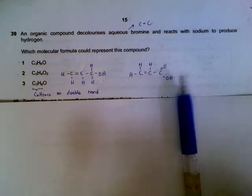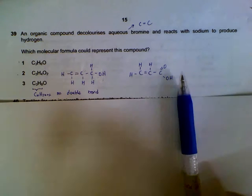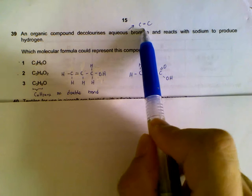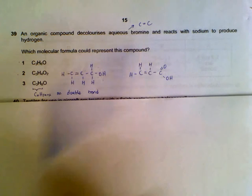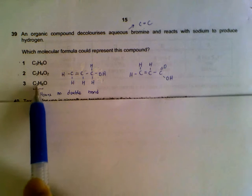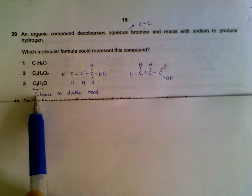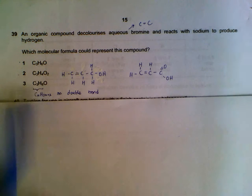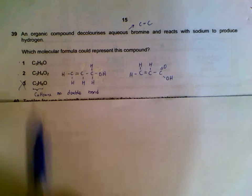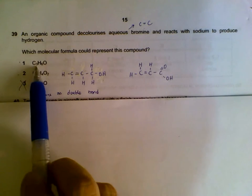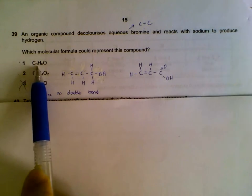Question 39. An organic compound decolorizes bromine and reacts with sodium. Decolorizes bromine means it's unsaturated, at least it will have a double bond. If you look at quickly the carbon and hydrogen, we can see that the third one, it is CnH2n+2, so this one is saturated. It will not be able to decolorize bromine. For the other two, they are less than CnH2n+2, so we can expect them to be unsaturated.